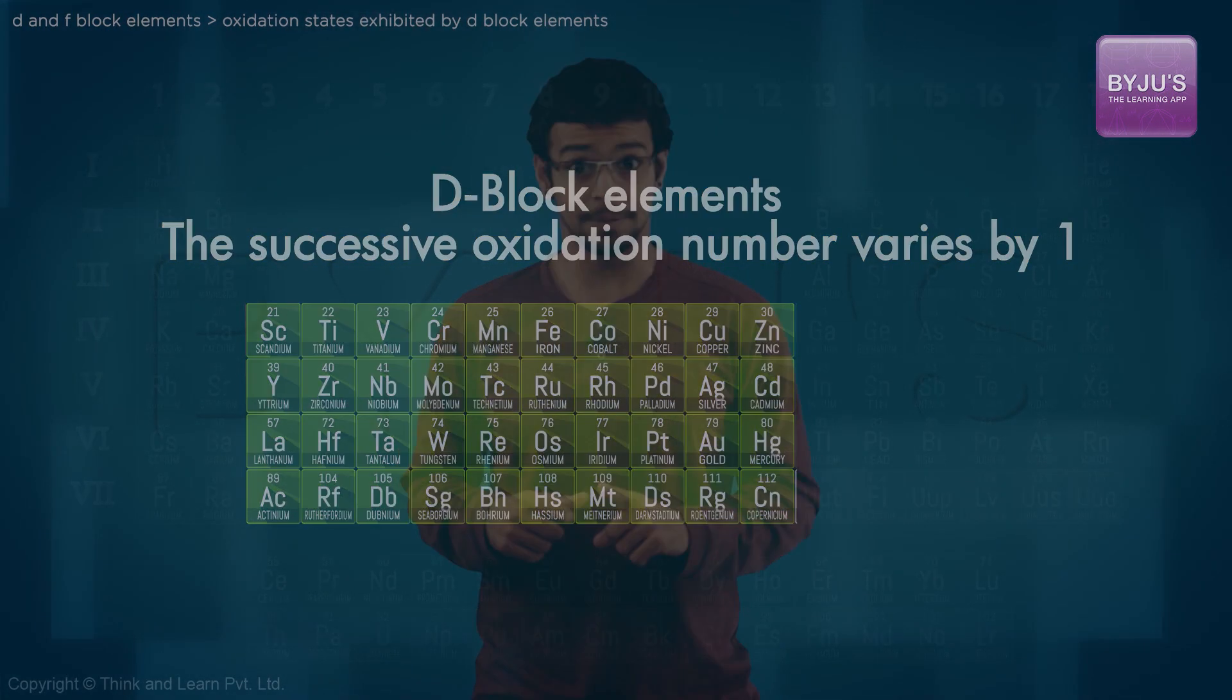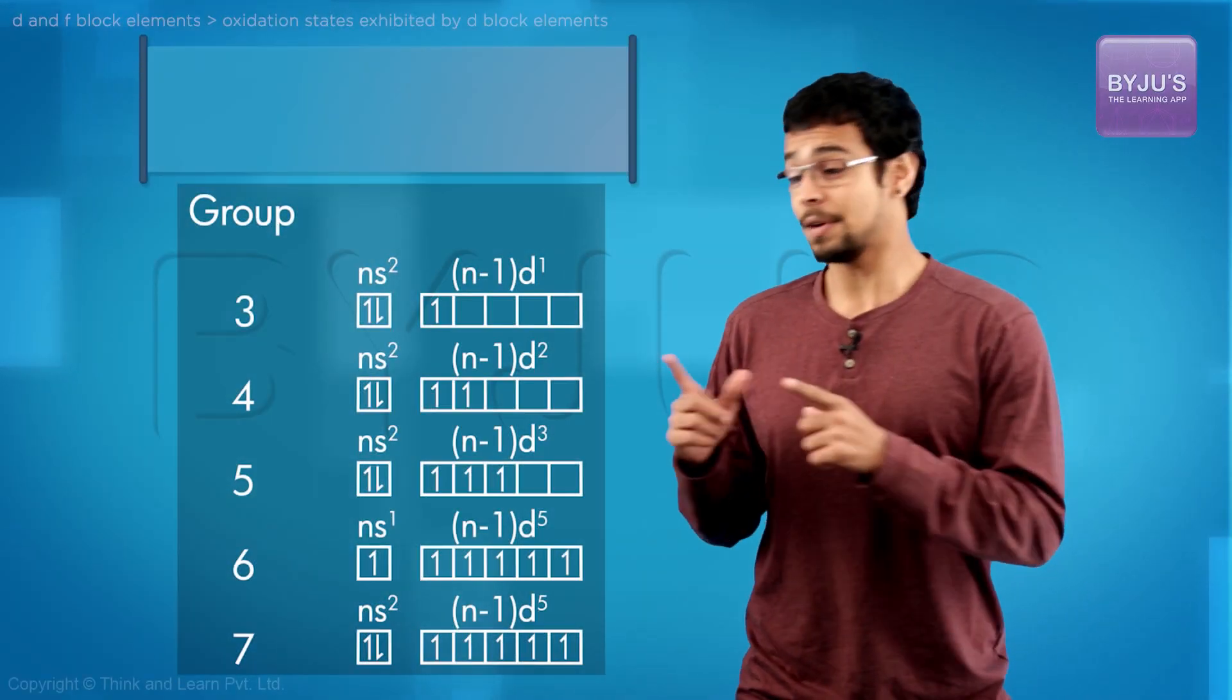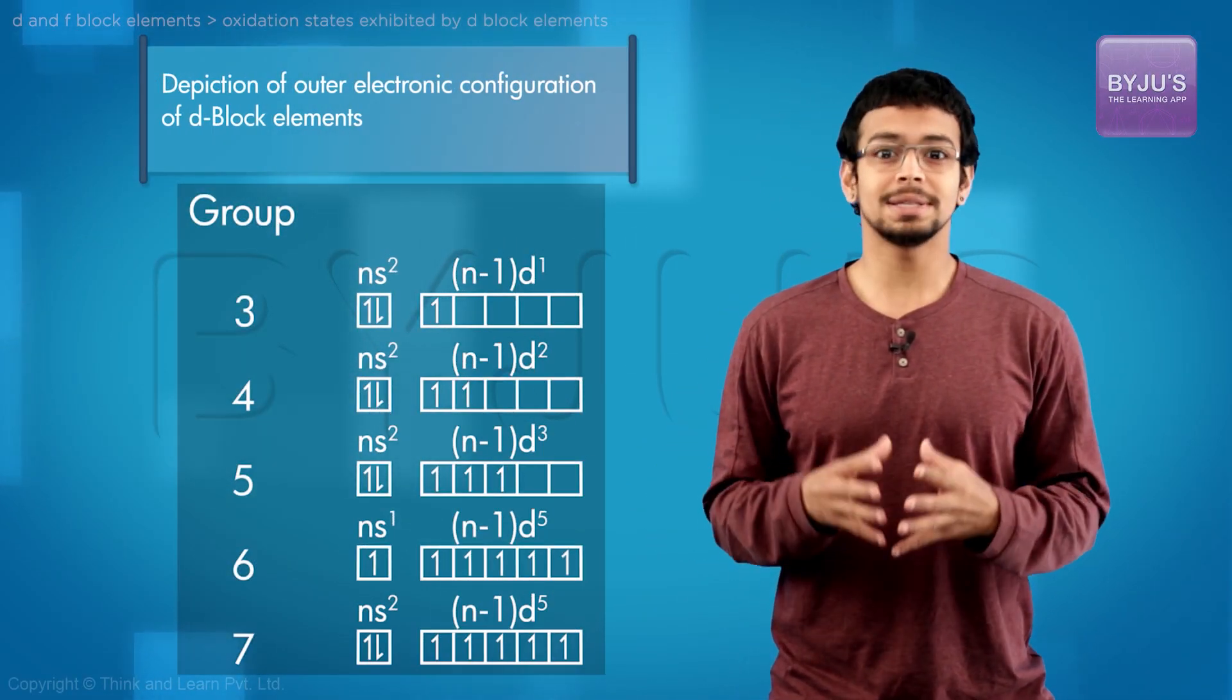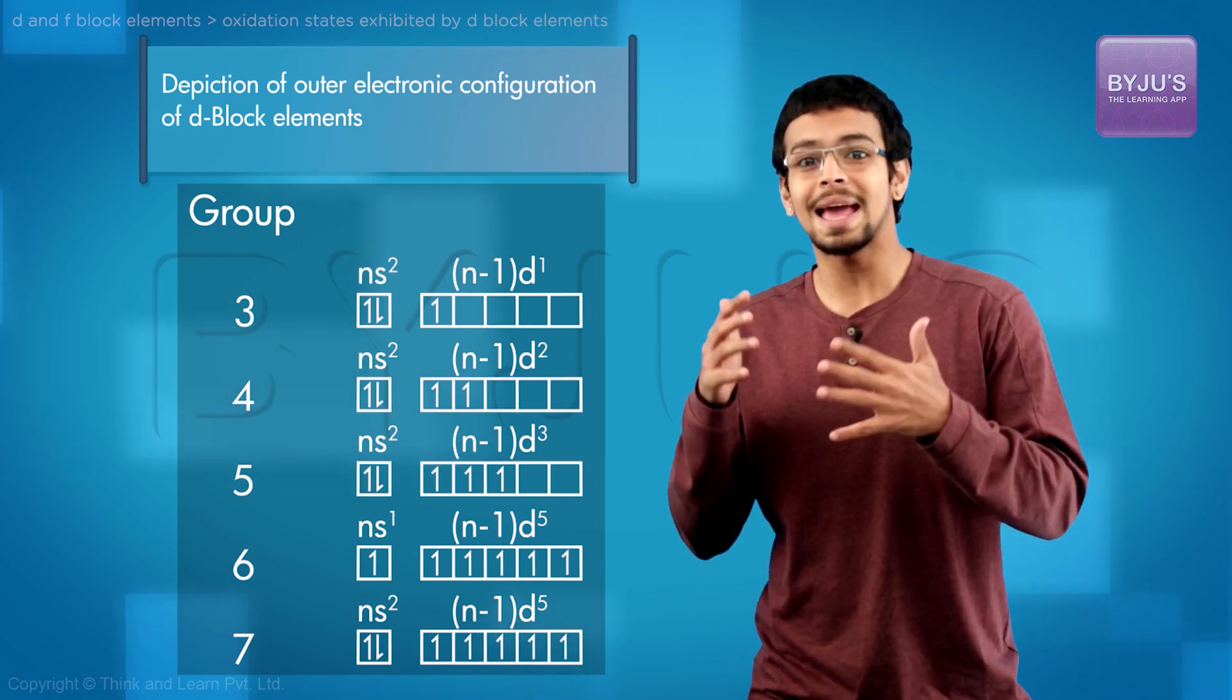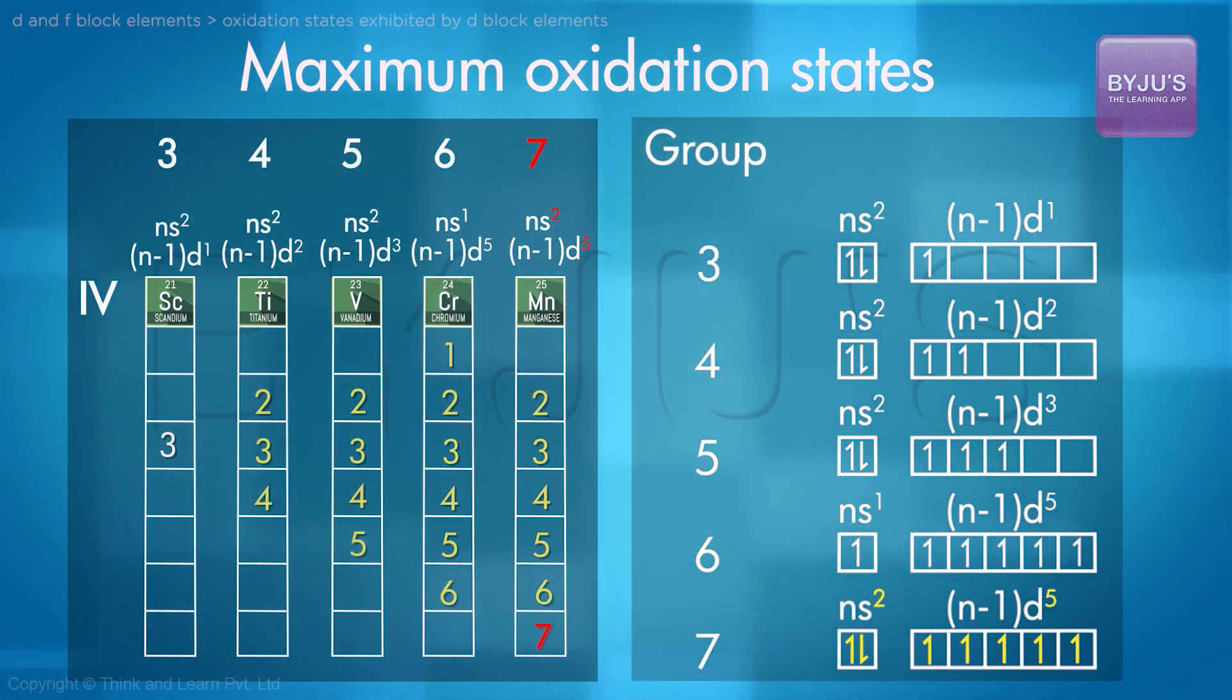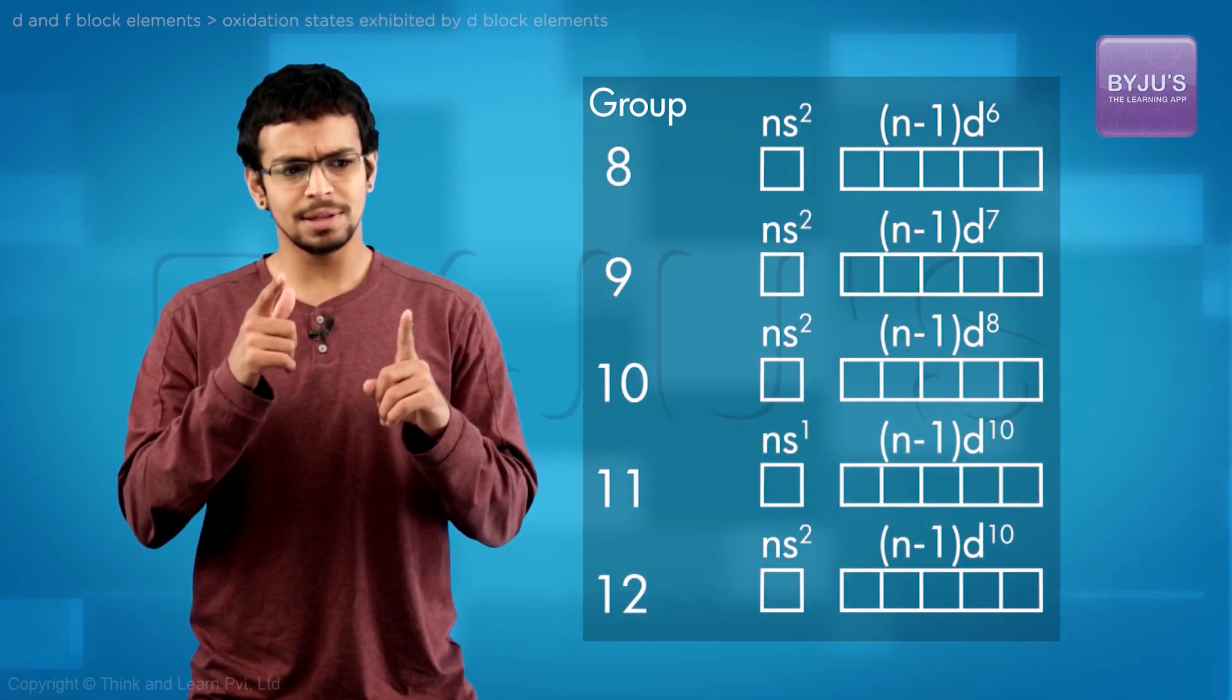For the first 5 elements in any series, the maximum oxidation number is exhibited as the sum of the ns and the n-1 d electrons. Group 7 onwards, notice here that the electrons in the d orbitals now start pairing up.